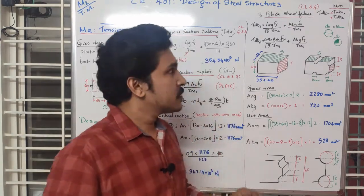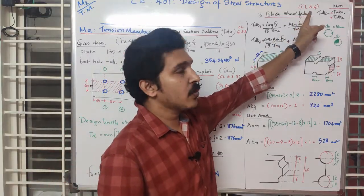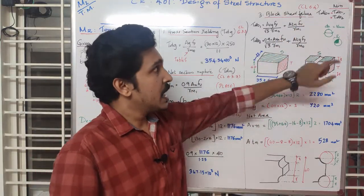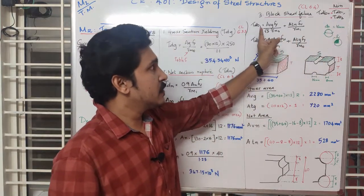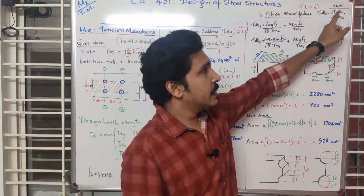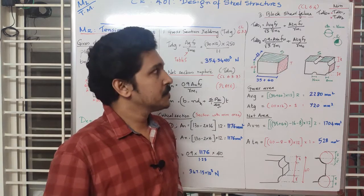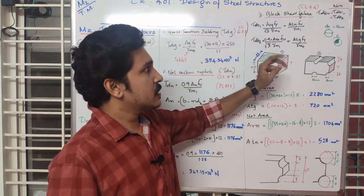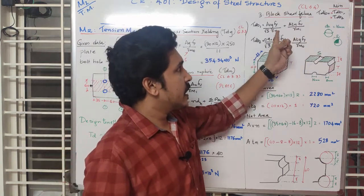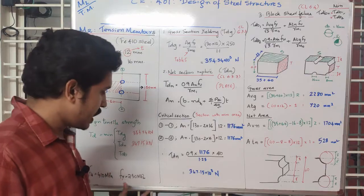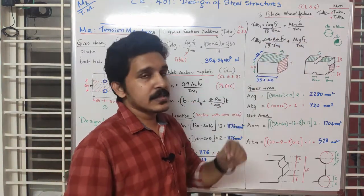The third type of failure is block shear failure. Block shear failure is covered under clause 6.4 of the code, denoted TDB. There are two equations: TDB1 and TDB2. We take the minimum value as per the code. The values of FU, FY, gamma M0, and gamma M1 are already known.